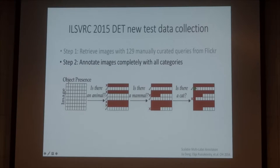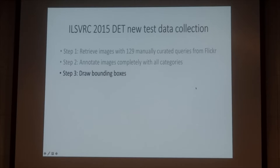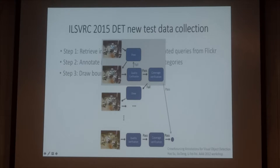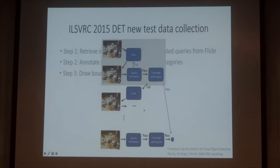The first step is to identify the class that appears in the object. After we know the class in the image, we annotate the box. For each image-class pair, we draw one bounding box at a time. You draw a box and then you ask another annotator to verify if the box is good or not. If not, then you draw again. And if the box is good, you ask another annotator to say whether all the objects have been annotated or not. If not, then you draw again. This process is repeated several times until all the objects in the image are annotated.